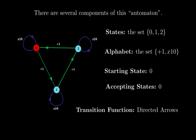The transition function is the directed arrows with their corresponding labels. This is the definition of an automaton and its graphical representation, which we're going to use to check for divisibility by 3.